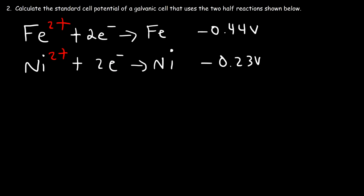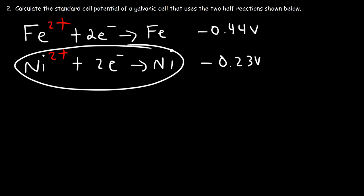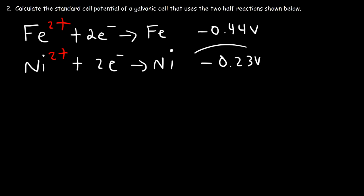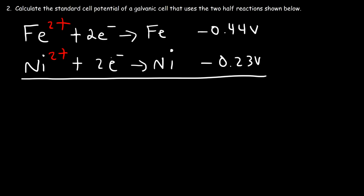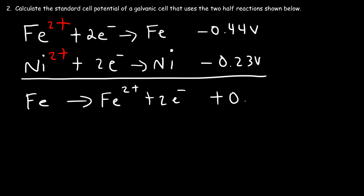Now for the second problem: calculate the standard cell potential of a galvanic cell that uses the two half reactions shown below. We need to adjust the half reactions so that one has electrons on the right and the other on the left, and when we add the cell potentials it's positive. If we reverse the second reaction, the cell potential would be positive 0.23, and adding that to negative 0.44 gives a negative result — we don't want that. Therefore, we need to reverse the first half reaction, so Fe becomes Fe²⁺, and the cell potential becomes positive 0.44.